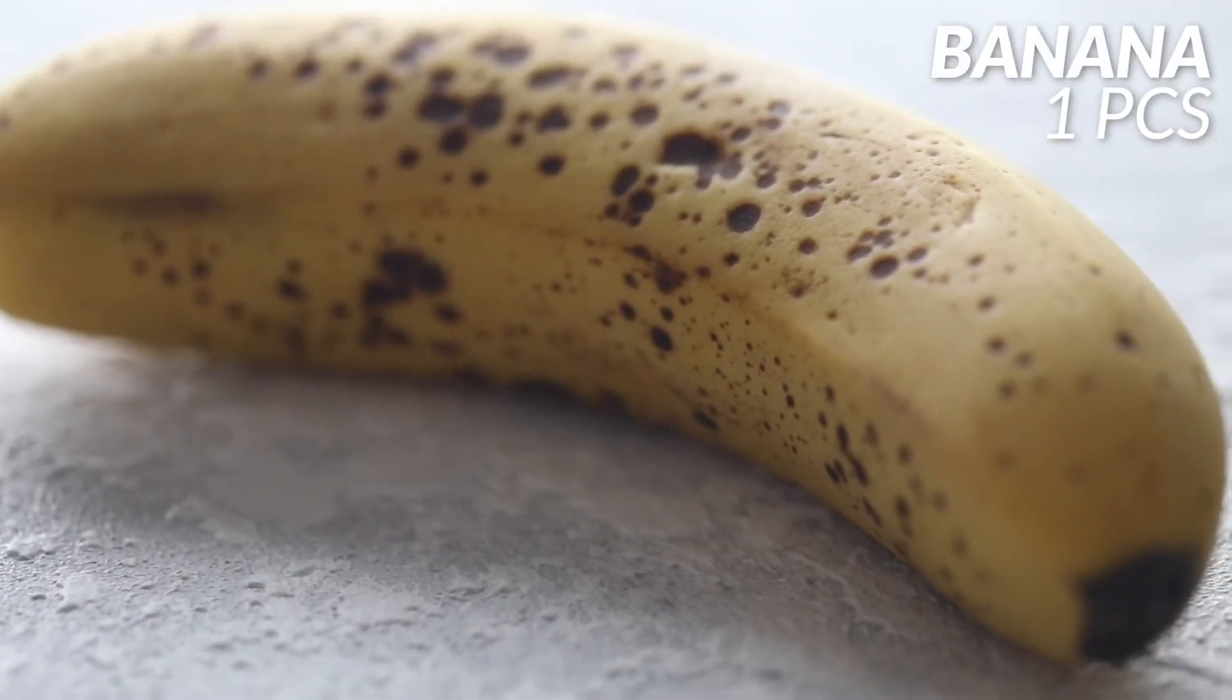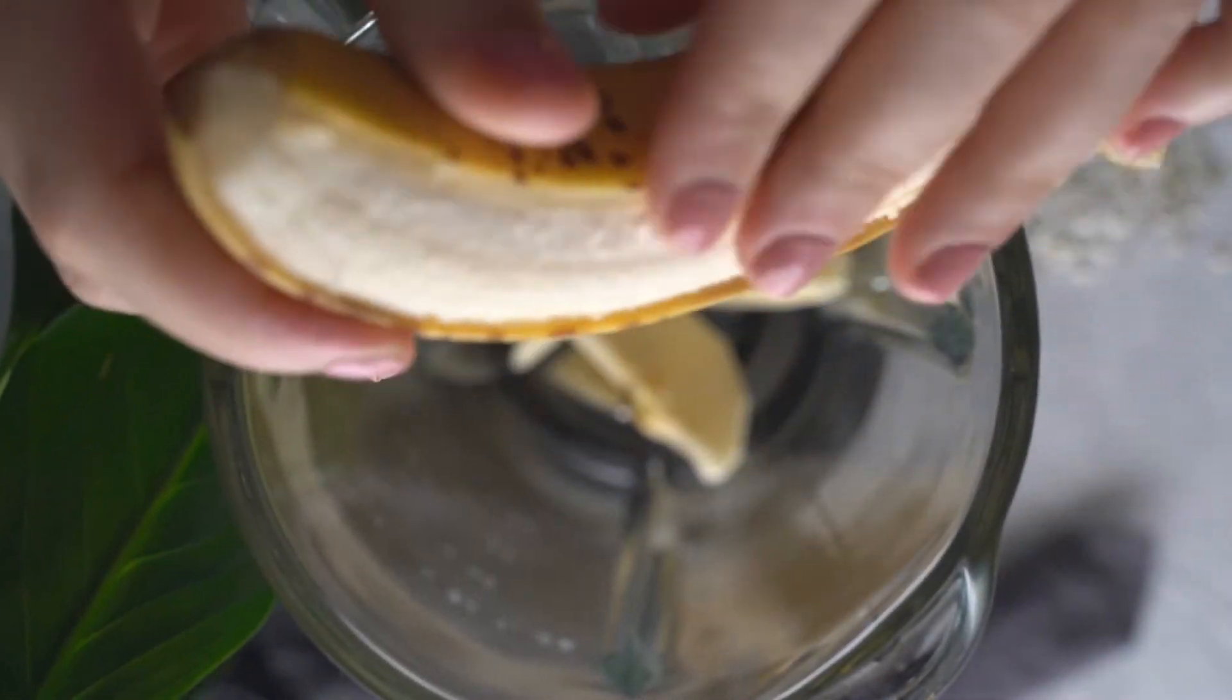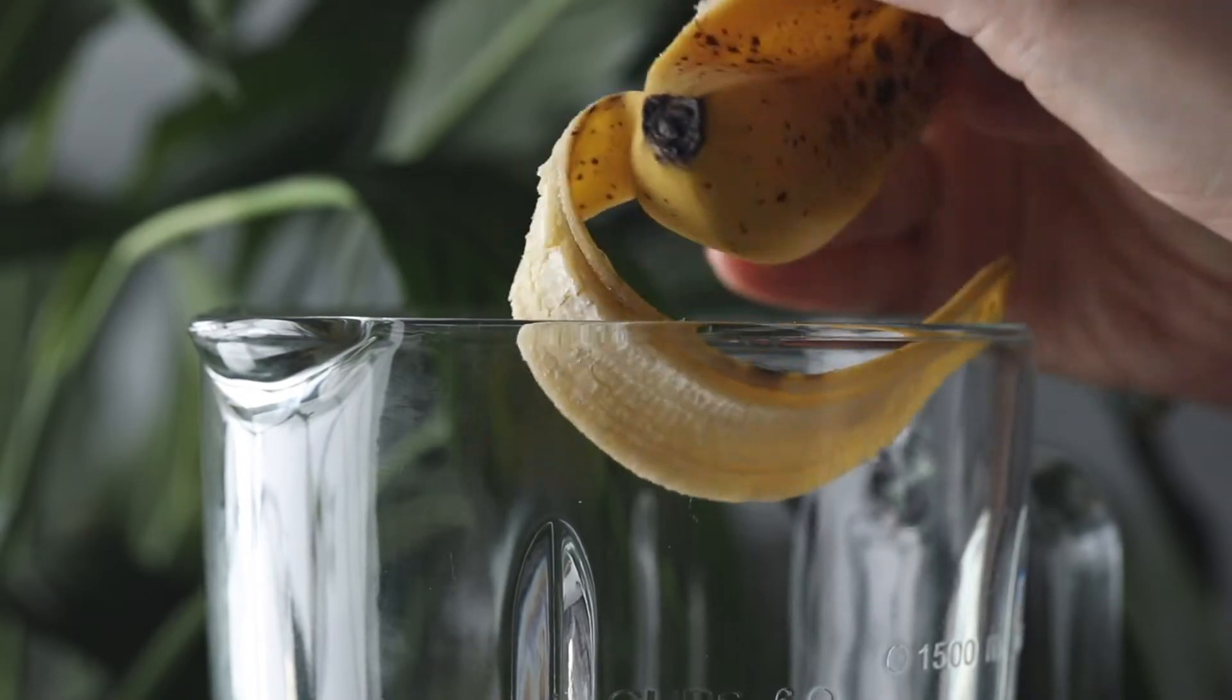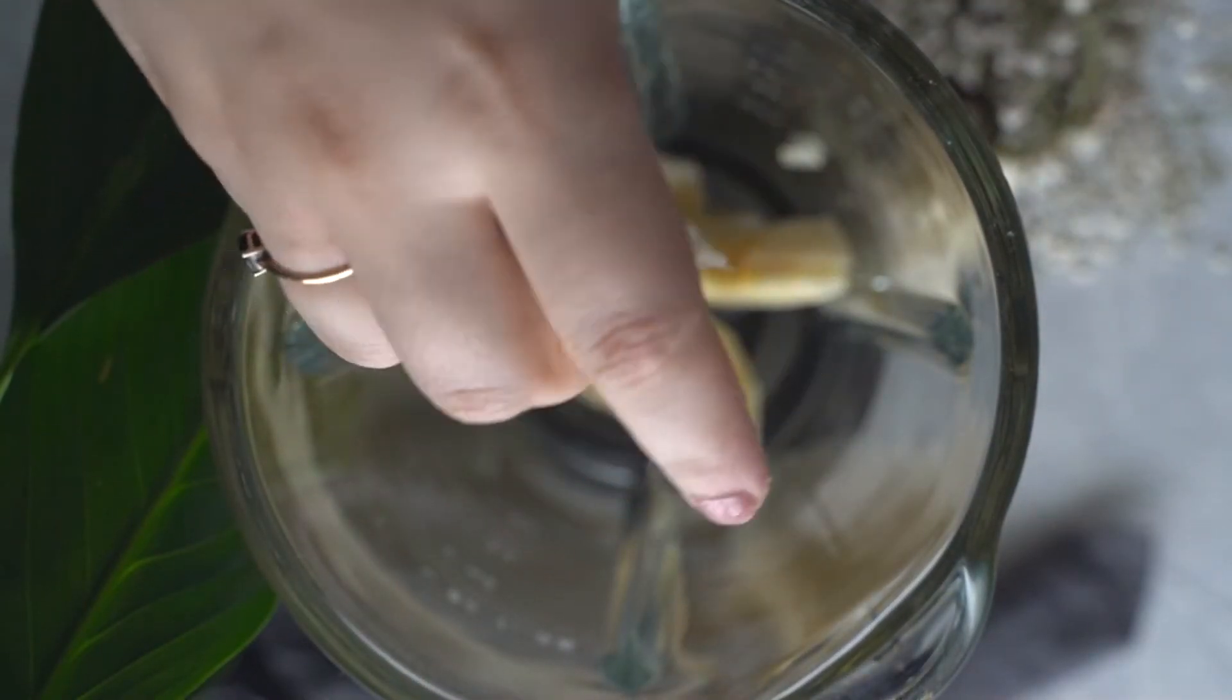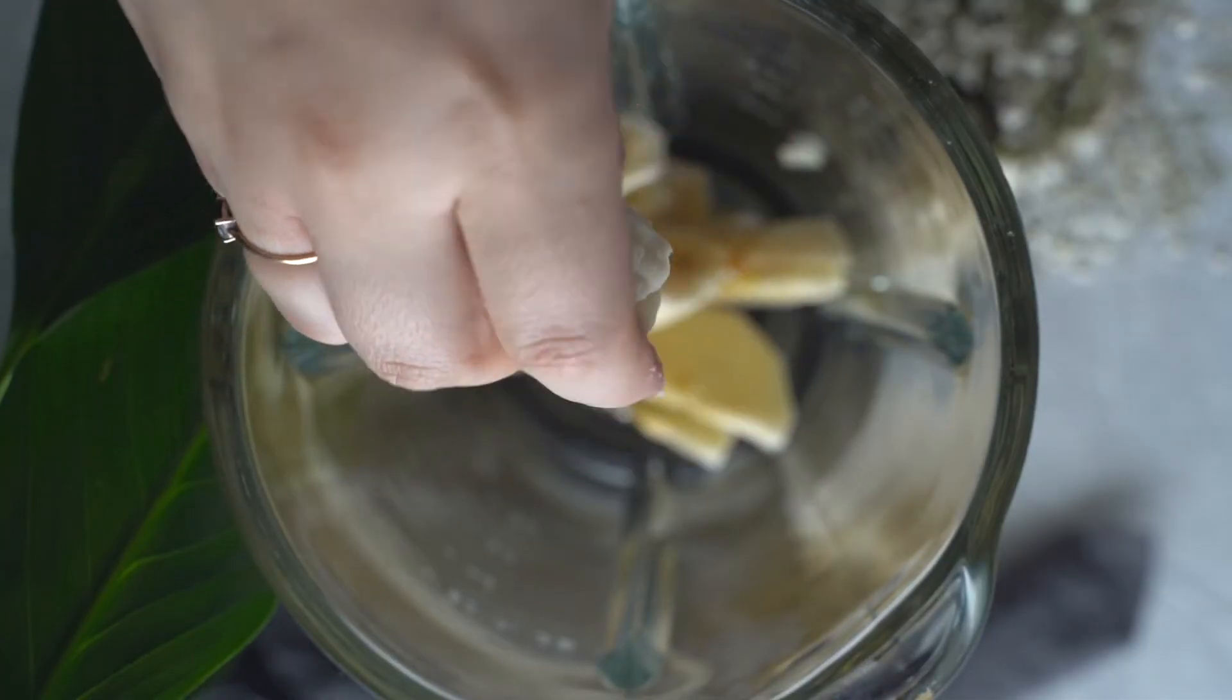Next, add in one small ripe banana. I'm just going to use my fingers to pull it apart. That's in the blender. It's a lovely source of potassium and fiber, and it has plenty of natural sugars. You don't want to use too many bananas because then smoothies will become quite high in sugar, but one banana makes it sweet enough and delicious.